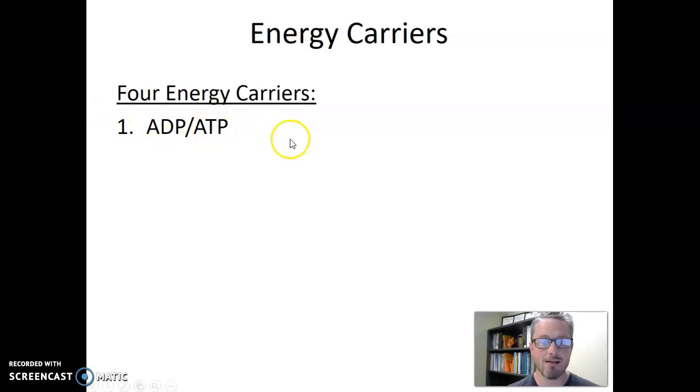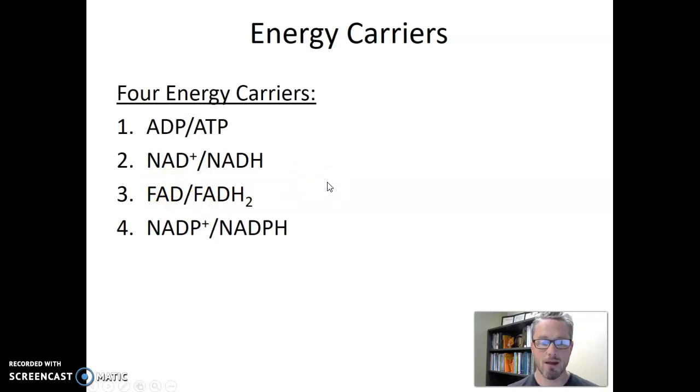So ADP and ATP. Another one we'll talk about is NAD+ or NADH. Again, NAD+ is lower energy, NADH is higher energy. FAD and FADH2. Again, FAD is the low energy form, FADH2 is the high energy form. And then finally, NADP+ and NADPH. NADP+ is the low energy form, and NADPH is the high energy form.